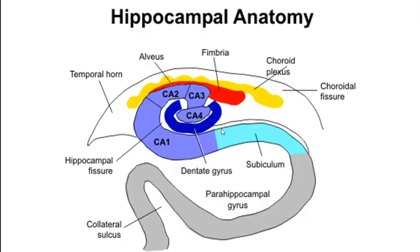Looking at another diagram of hippocampal anatomy: this is the parahippocampal gyrus, and if you go above it and locate medially, you will find the hippocampal formation.